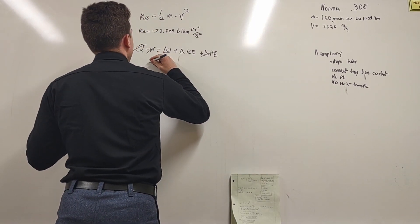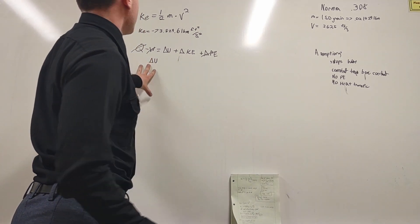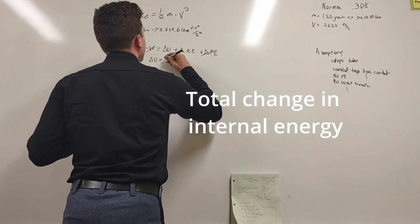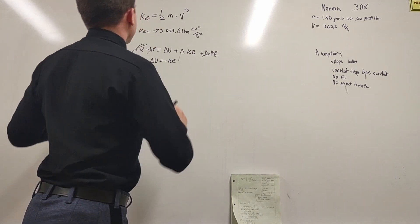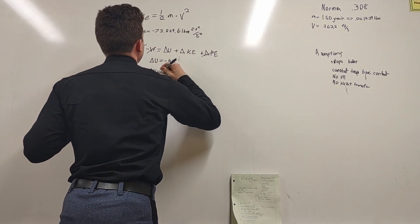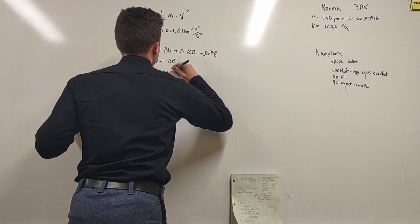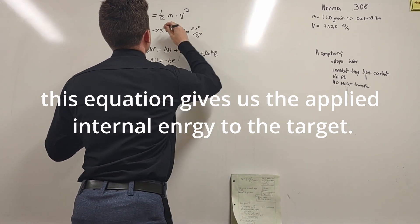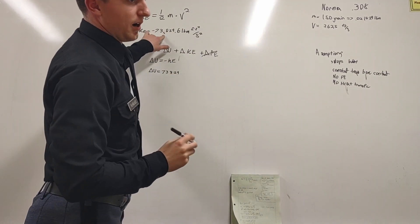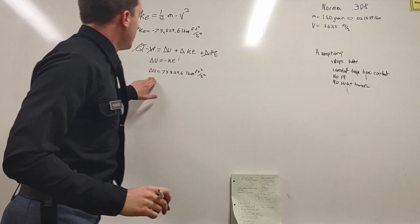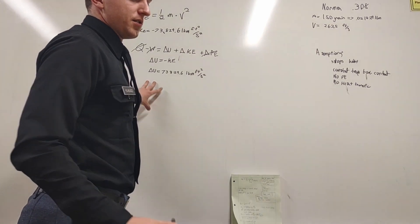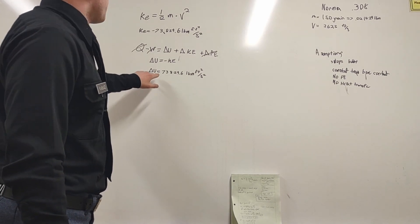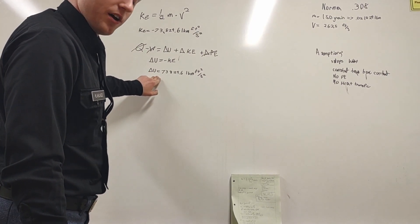Now that means that delta U, which is just total internal energy - that's what that stands for - is equal to negative KE. That gets rid of that negative sign, which is really nice. Because now this is in terms of energy that the water, or the substance that we're putting it into, the substance that we're applying the bullet to - now we have the force applied. That's pretty cool.